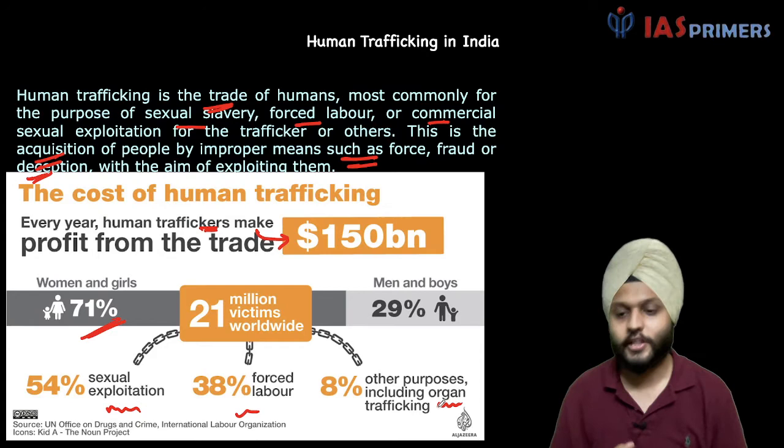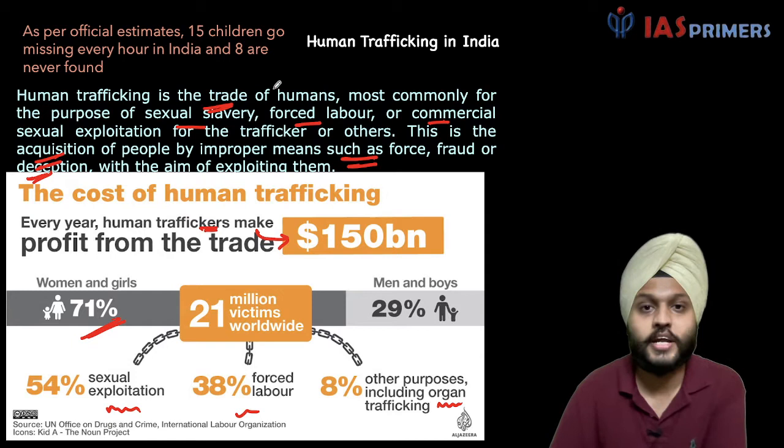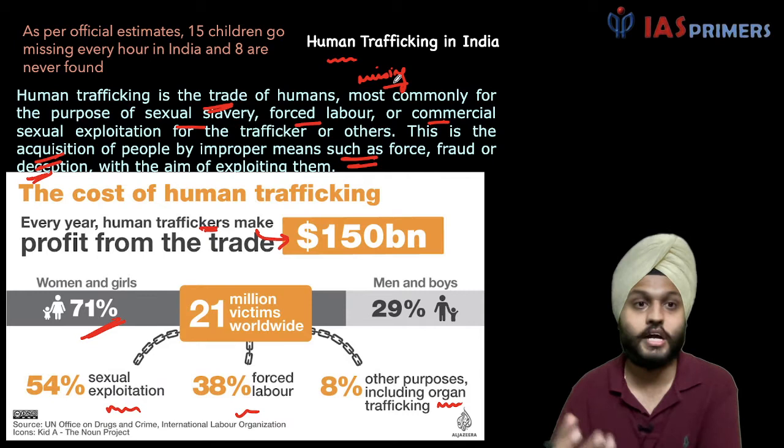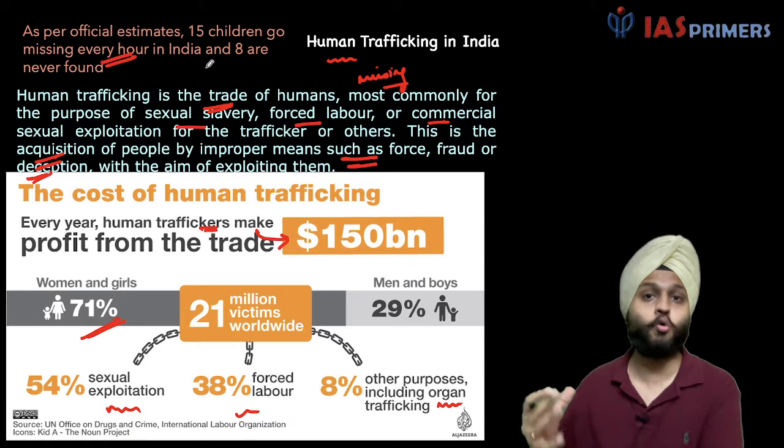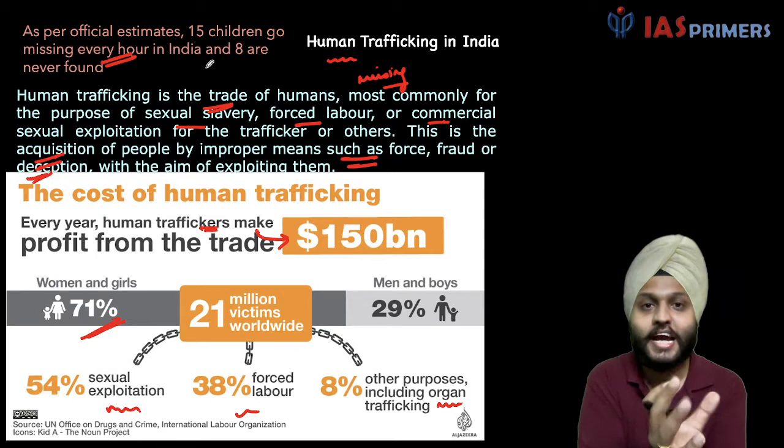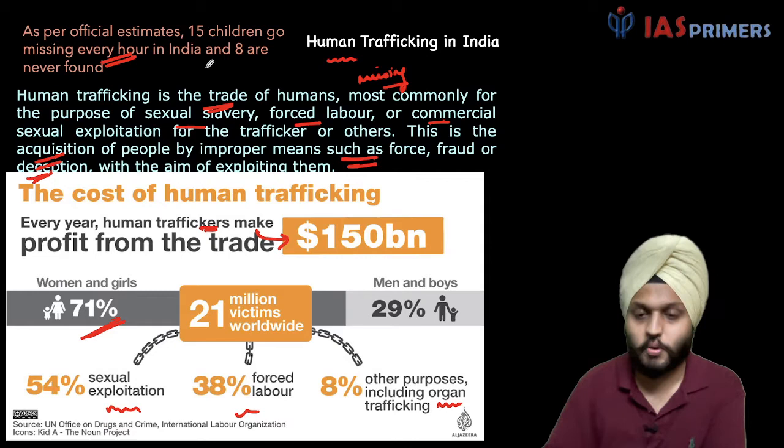One key fact from the NCRB: one way of identifying human trafficking is the number of people that go missing and are filed as such in FIRs. As per official estimates, 15 children go missing every hour, and 8 are never found — that is, more than half of them are never found. This affects the rights of the child, the rights of the family, and so on.